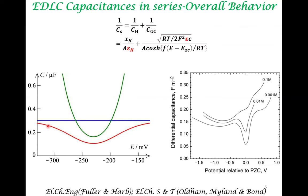Comparing the Stern model against experimental results: the model captures the variation of capacitance with potential, and the symmetry between positive and negative potentials is also captured. Far away from the point of zero charge, the capacitance is approximately constant — that is also captured. Additionally, the increase in capacitance with concentration, as described by the Gouy-Chapman model, is captured by the Stern model as well.